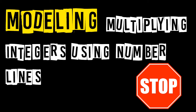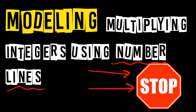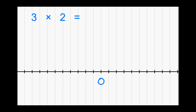You are so close to being finished, math superstar! You are now at modeling multiplying integers using number lines. The stop sign is alerting you: watch this part of the video first without taking any notes or drawing any pictures. Watch through the different models, paying careful attention. Then pause, rewind to this stop sign where it says 'number lines,' and take notes with your pencil.